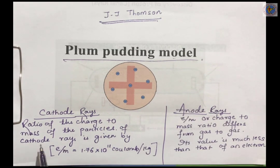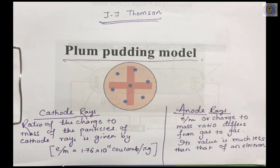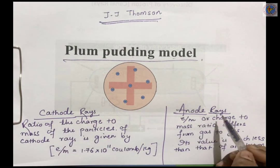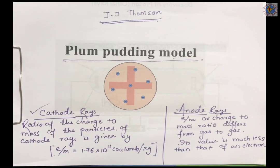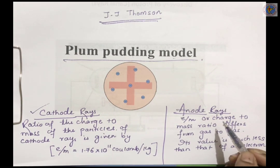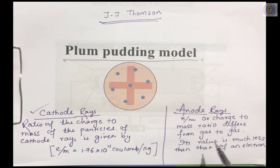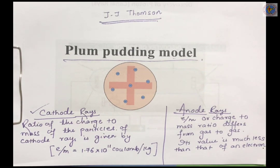Let us discuss the charge-to-mass ratio (E/m) of cathode rays and anode rays. In the case of cathode rays, the E/m value is 1.76 × 10¹¹ coulombs per kg, and this value does not depend on the nature of the gas taken or the metal forming the cathode. In the case of anode rays, the E/m ratio differs from gas to gas, and its value is much less than that of an electron.